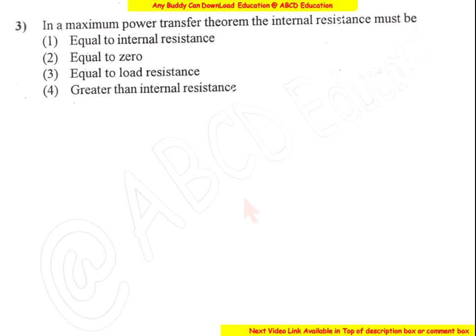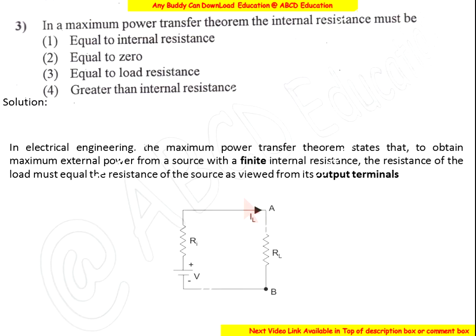In the Maximum Power Transfer Theorem, the load resistance and the internal resistance must be equal. The theorem states that to obtain maximum external power from a source with a finite internal resistance, the resistance of the load must equal the resistance of the source as viewed from the output terminal. So the load resistance and source resistance must be equal. The answer is option 3.